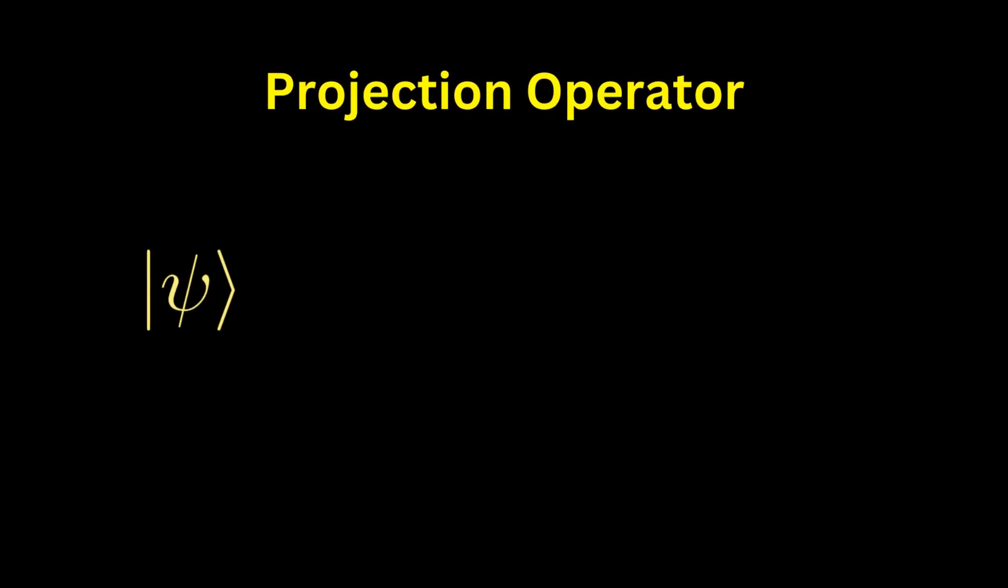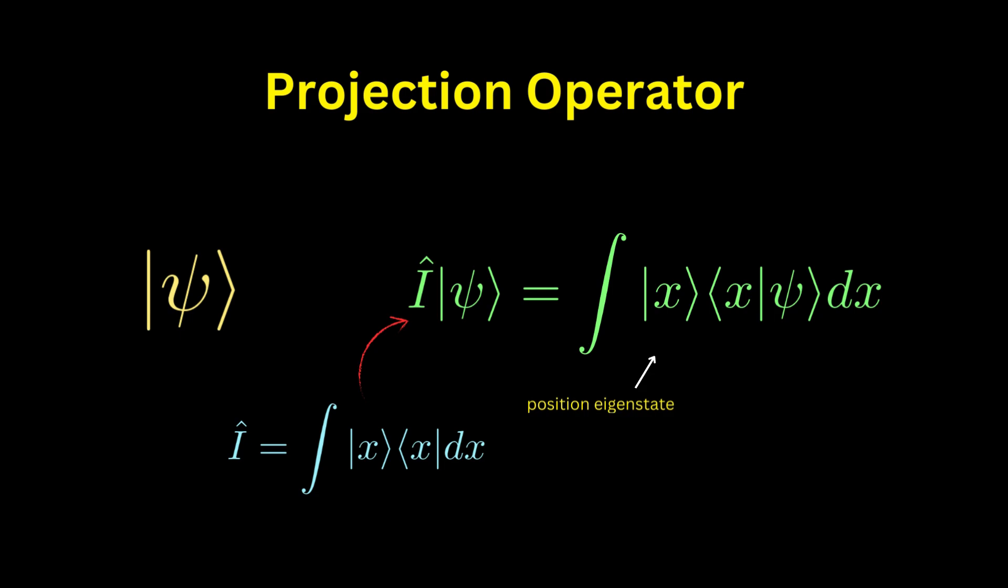The last thing to mention is the projection operator. Suppose you have an abstract ket vector and you want to represent it in some space, say the position space. What you do is you insert the identity operator. This is called the outer product now, and this whole thing is called the identity operator of the basis. Notice what happens here. This is the same formula we encountered earlier when we define the position wave function. This applies to all other bases of other spaces.